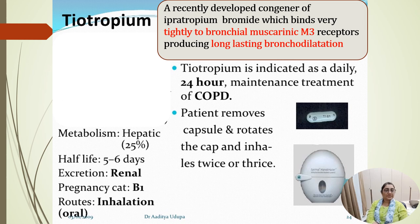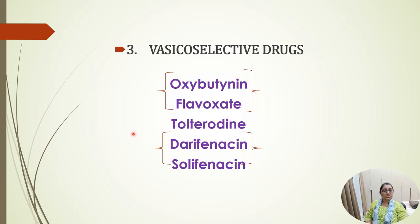Tiotropium is a recently developed congener of ipratropium bromide that binds very tightly to bronchial muscarinic M3 receptors, producing long-lasting bronchodilation. It is available in capsule form and is used with a rotahaler — the capsule is loaded into the rotahaler inhaler for administration.